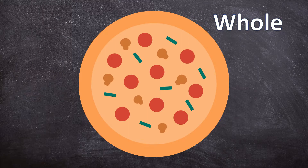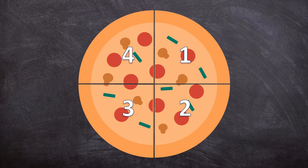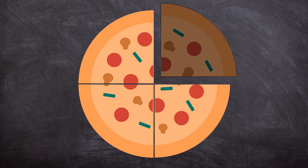This is a whole pizza, but we don't usually eat a pizza just like this. We usually cut it into pieces and eat the pizza bit by bit until we're full. So let's cut this pizza into one, two, three, four equal pieces, but I only want to eat one of those pieces.